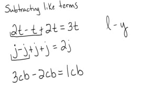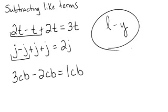But if they're not alike, you can't combine them. So if I have one lollipop minus one yo-yo, I can't subtract a yo-yo from a lollipop. I can't simplify that because they're not the same. So that's how you combine like terms with subtraction.